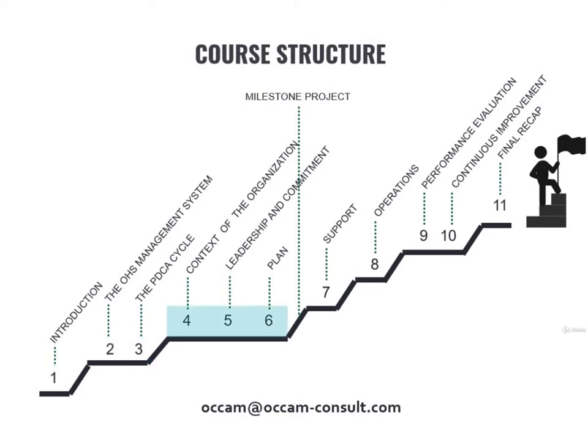Next, we will start with the risk management sections, which will be Chapters 4, 5, and 6. We'll learn about risks and risk management basics. The risk management section is so important that we decided to put something special at the end of it — an assignment that we will call the Milestone Project. In this project, you will receive the assignment of making a very simple version of a context analysis and a simple version of a risk opportunity assessment.